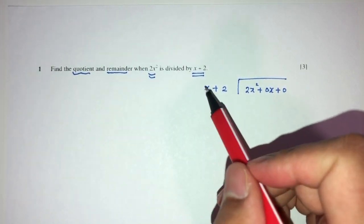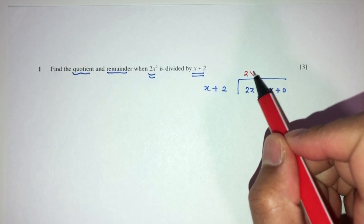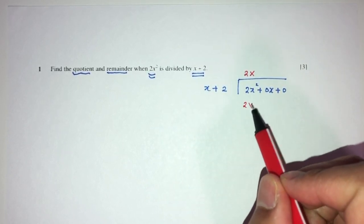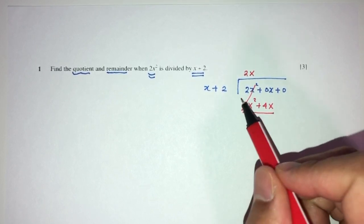Now, one by one, how can you make x become 2x squared? Well, x have to be multiplied by 2 first, and then x. So take the whole thing, times this, you will have 2x squared plus 4x. This will be gone.